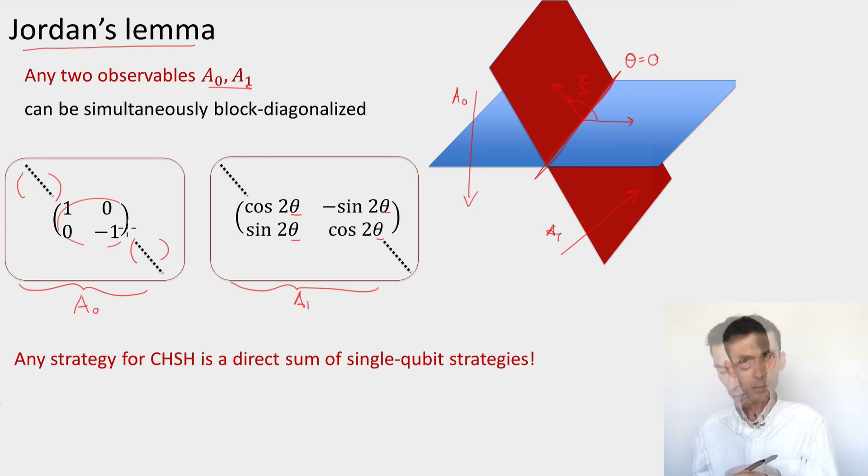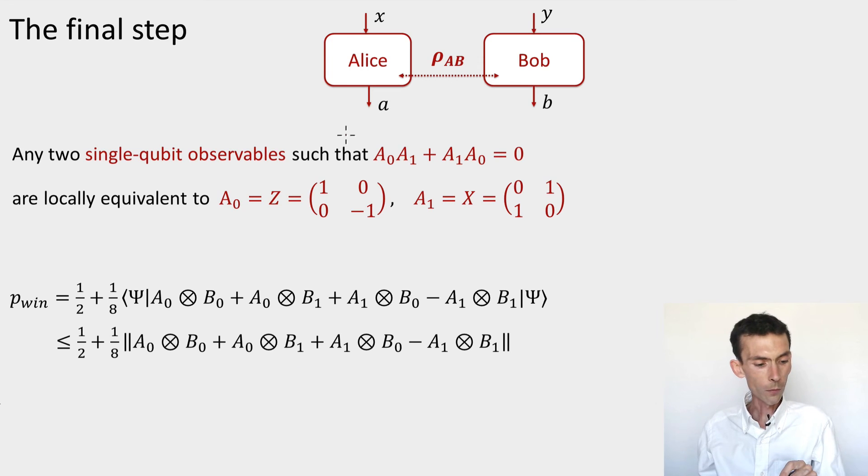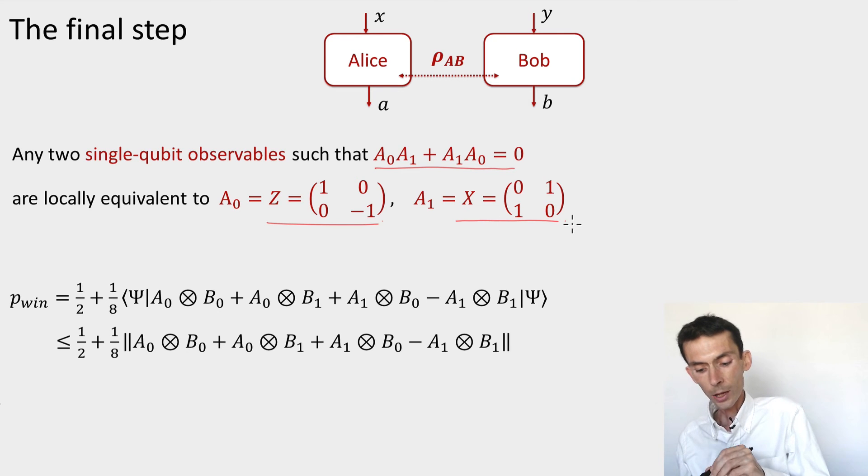So let's stick with our CHSH game and wrap up the analysis. Recall what we've seen so far is that Alice's strategy we can assume is two-dimensional, and if it has to be an optimal strategy, her observables must anti-commute. And now the last step is just an observation: if you have two two-by-two Hermitian matrices that square to identity and anti-commute, then you can always find a basis in which the first one looks like a Z. This was actually given to us by Jordan's lemma, and the second one looks like an X, meaning that the principal angle theta between the two of them in order to anti-commute must be pi over four.